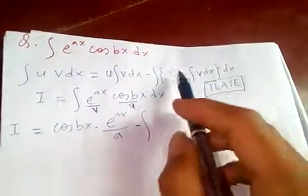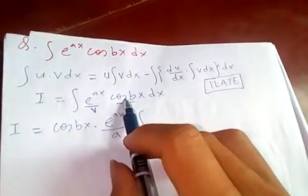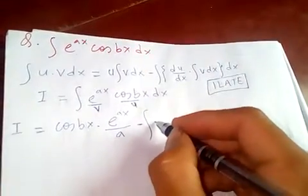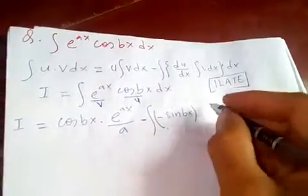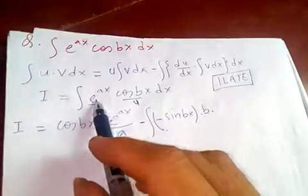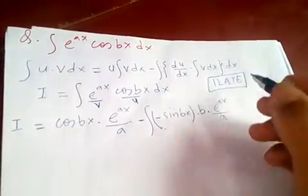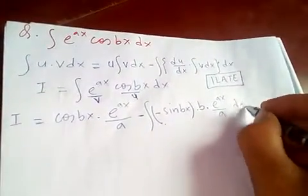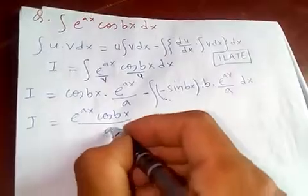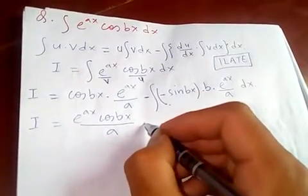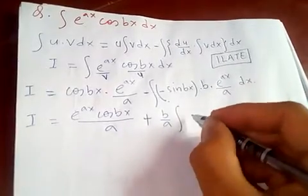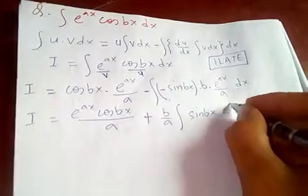The derivative of the first function: u equals cos bx, so du/dx equals negative sin bx times b. Applying the IBP formula, I equals e to the ax times cos bx over a, minus the negative giving us plus b over a, times the integral of sin bx times e to the ax over a dx.